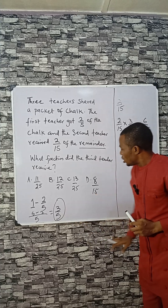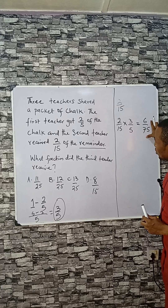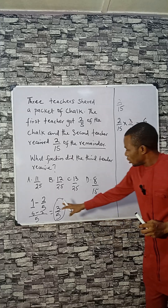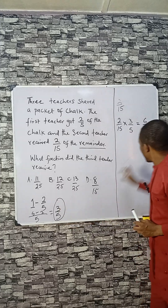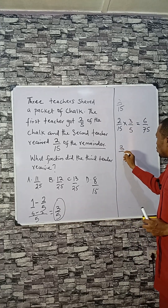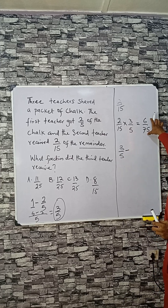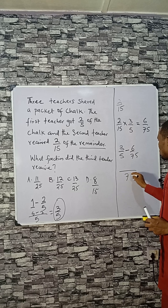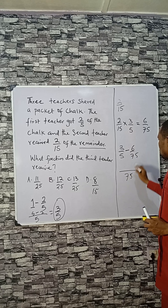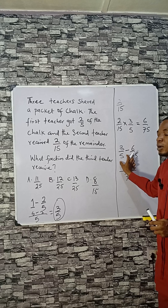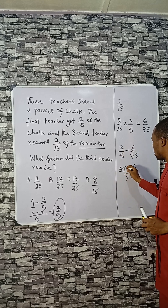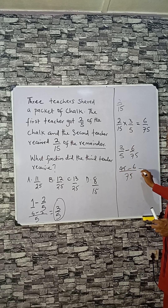The remainder is 3/5, and the second teacher took 6/75, so the third teacher receives 3/5 minus 6/75. The LCM of 5 and 75 is 75: 75 divided by 5 is 15, times 3 is 45. So we get 45 minus 6, which is 39 over 75.